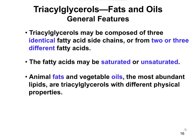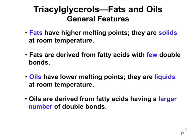Animal fats and vegetable oils are the most abundant types of lipids, and they have very different properties. Animal fat, like the fat on a steak, versus vegetable oil like canola, peanut, or olive oil — they look very different. Vegetable oils are liquid at room temperature, while fats are usually solid. Fats have a higher melting point, and the difference in properties has everything to do with the number of double bonds.